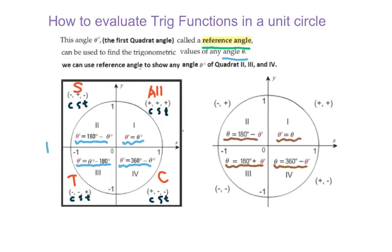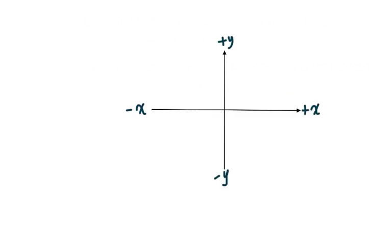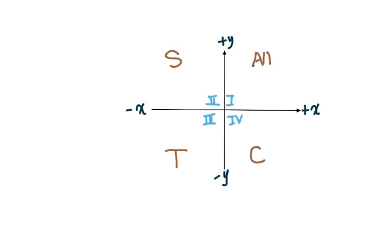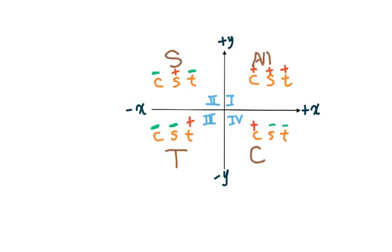Basically, remember we use 180 degrees and 360 degrees to find the reference angle. Now let's talk about the sign of trig functions in different quadrants. We have first, second, third, and fourth quadrant. We know "All Students Take Calculus." This is the way to remember the different signs of trig functions in different quadrants.